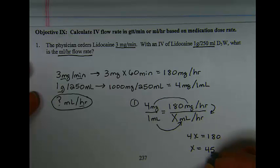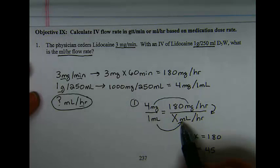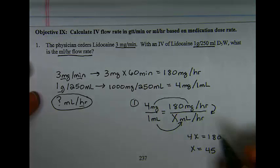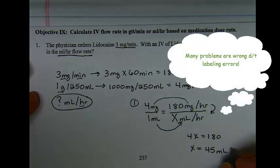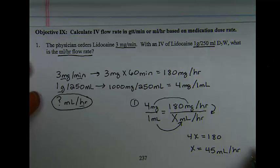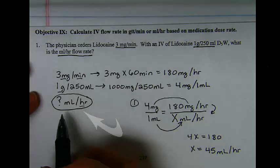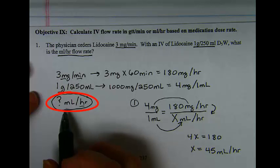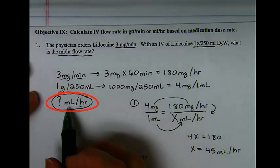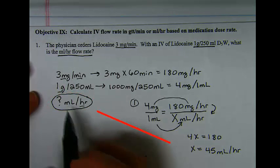I'm going to be working with x equals 45. I go back up, verify x was milliliters per hour to make sure I get the right label. And then verify by looking at my toolbox question to make sure I'm done. I was looking for milliliters per hour. I have established a milliliter an hour rate.